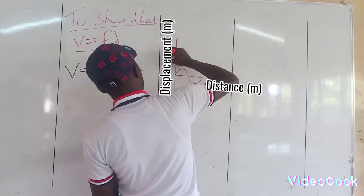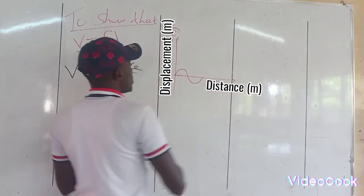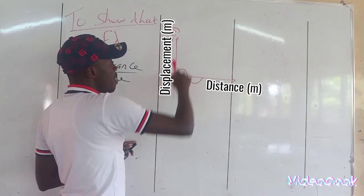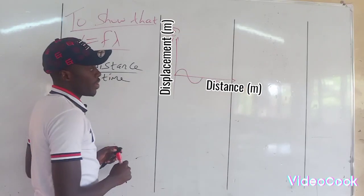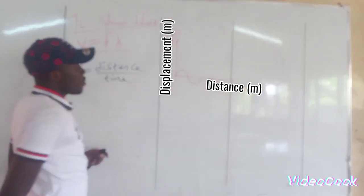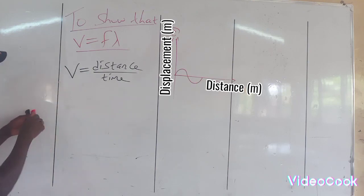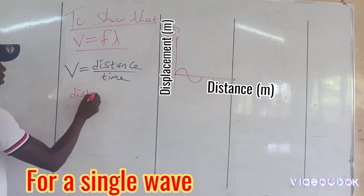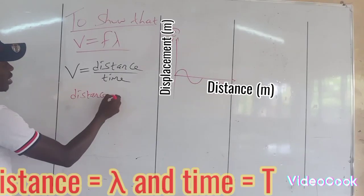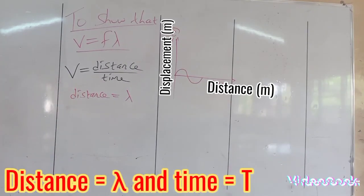So that means we have the amplitude and we have the wavelength — one wavelength. If we have the wavelength here, the distance covered in one wavelength is called the wavelength, or lambda, which is the symbol for wavelength.